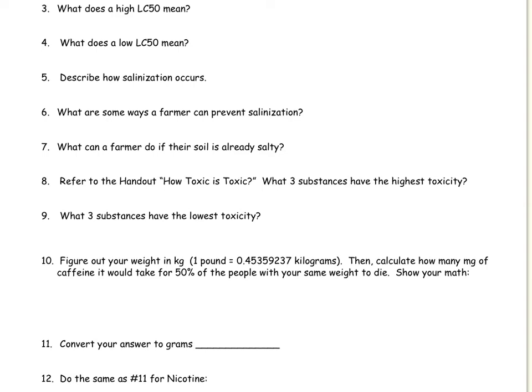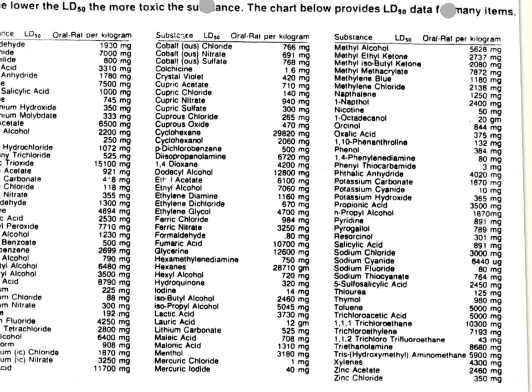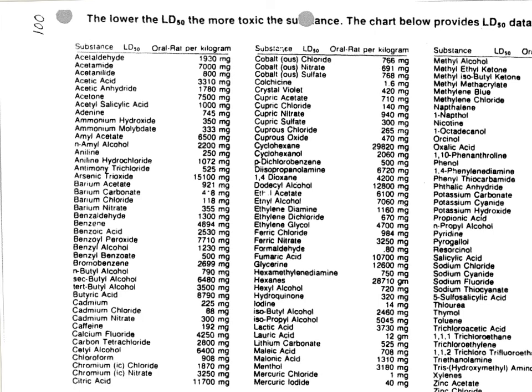Number eight, refer to the handout 'How Toxic is Toxic.' The top of the worksheet that you need for numbers eight through thirteen is called 'The Lower the LD50, the More Toxic the Substance.' This is the reference sheet that you need. It's going to ask you the top highest toxicity, which means that you're going to look for the lowest amount that kills you. For number eight, higher toxicity means a lower LD50. Go ahead and go through this worksheet and look for the lowest numbers and write down the three substances with the lowest number. This is LD50, this is a dose.